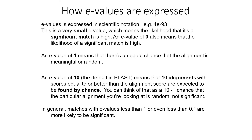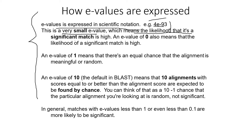We'll talk about how E-values are expressed. E-values are based on a number of terms and conditions. E-values are expressed in scientific notation — for example, 4e-93. This is a very small E-value, which means the likelihood that it's a significant match is high. An E-value of zero also means the likelihood of a significant match is high.